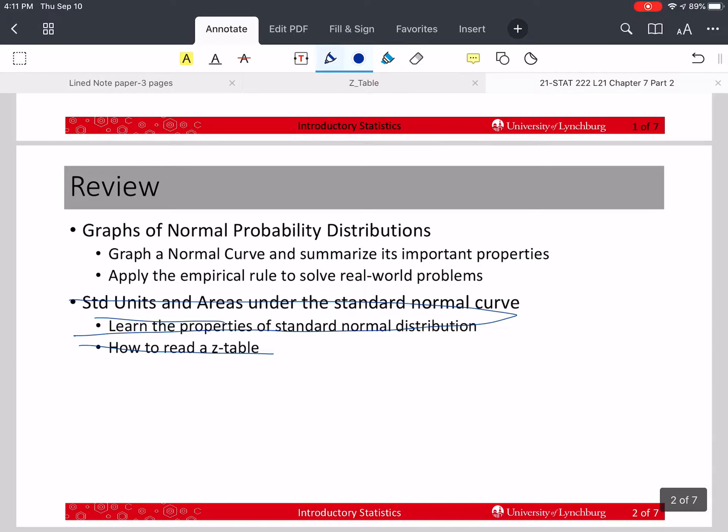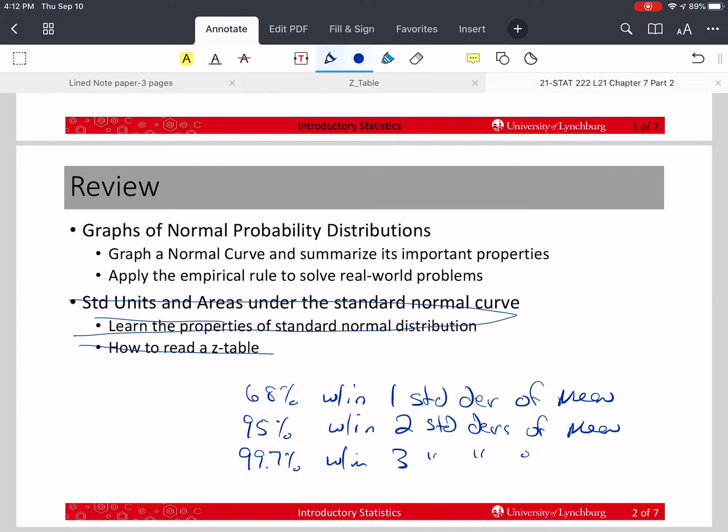Last time we talked about the general normal distribution, its graph, its important properties, and we applied the empirical rule, and we can use that to solve some real-world problems. Remember that the empirical rule has 68% within one standard deviation of the mean, 95% within two standard deviations of the mean on either side, and 99.7% within three standard deviations of the mean.